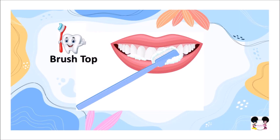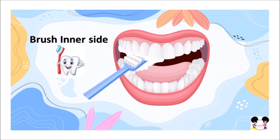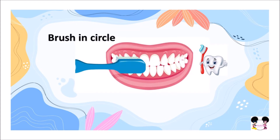First, brush the top outer layer of your teeth. Then brush the bottom outer layer of your teeth for a few seconds. Move your brush to the inner side of your teeth and brush for a few seconds. Then brush the inner surface of your teeth — brush both the upper and lower surface of the teeth. Brush in circles for a few seconds.